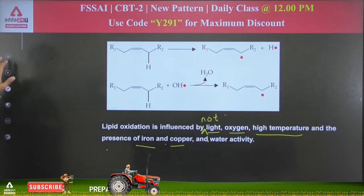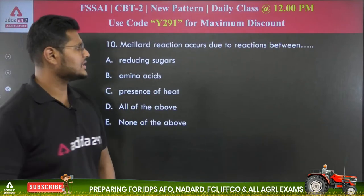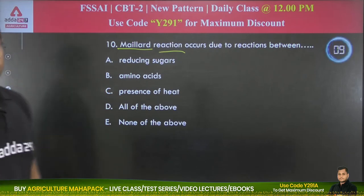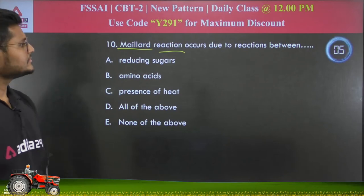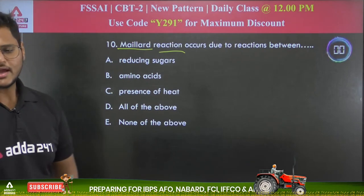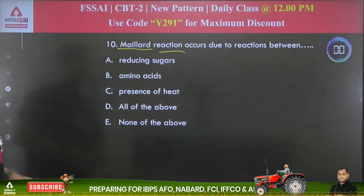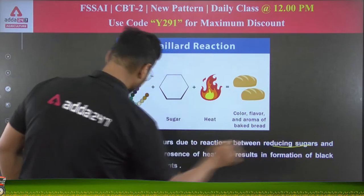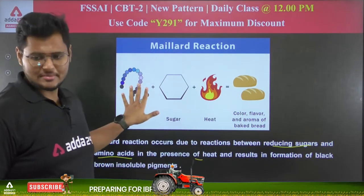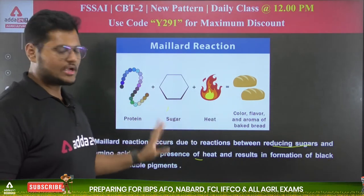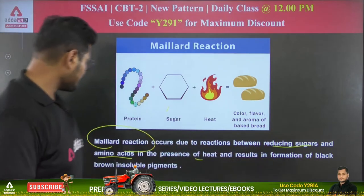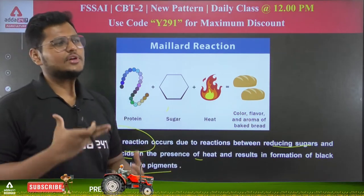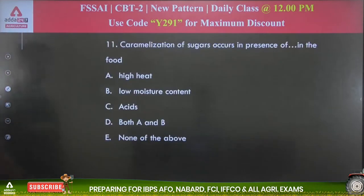Question 10: Maillard reaction occurs due to the reactions between — reducing sugars, amino acids in the presence of heat, or all of the above? The answer is all of the above. The Maillard reaction occurs when reducing sugars and amino acids (proteins) react in the presence of heat. It results in the formation of a black-brown insoluble pigment, contributing to the color, flavor, and aroma of baked products like bread, giving a smoky taste.